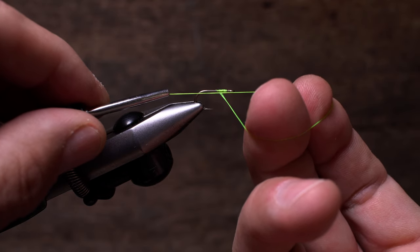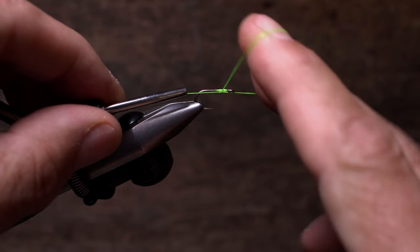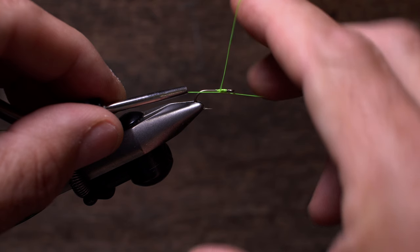Now rotate the pads of your fingers away from you. The thread from your middle finger should lead straight back toward the bobbin while the thread from your index finger is roughly perpendicular to the hook shank.